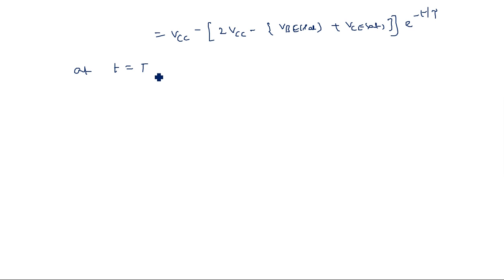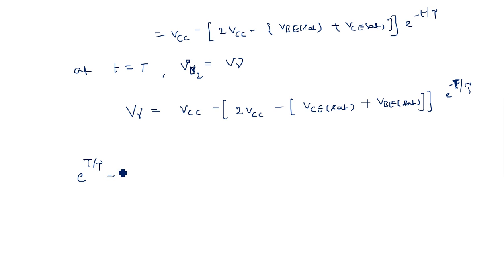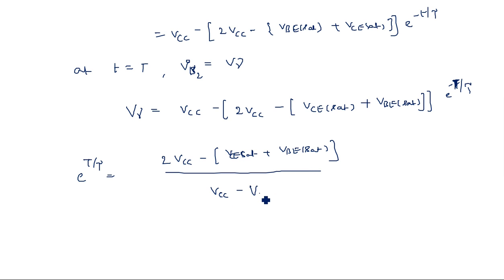At t = T (capital T), VB2 of transistor Q2 becomes V-gamma. So: V_gamma = VCC minus (2·VCC minus VCE_sat plus VBE_sat) times e to the power of minus T by tau. Rearranging to isolate e to the power of T/tau: e^(T/tau) = (2·VCC minus VCE_sat plus VBE_sat) divided by (VCC minus V_gamma).